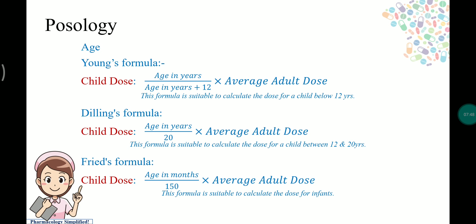For age-based dose calculation, we use Young's formula, Dilling's formula, and Freyde's formula. Young's formula gives child dose as: age in years divided by (age in years plus 12), multiplied by the average adult dose. Young's formula is suitable for children below 12 years of age.